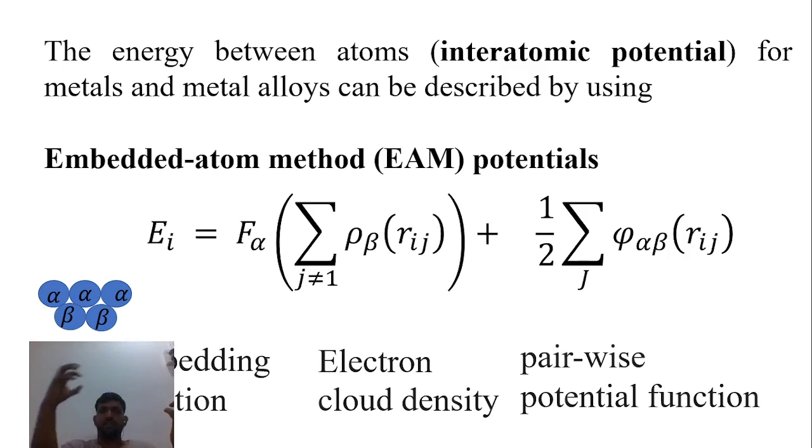Third is pairwise interaction, which describes how the potential varies. The pairwise potential function can depend on different terms, and the embedding function can also depend on different terms, but in general these are the three components.